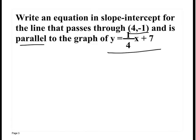We're writing an equation in slope-intercept form for the line that passes through (4, negative 1) and it's parallel to this graph. What is the slope of the original graph? One fourth. So what's the slope of this new line going to be? One fourth — it's parallel. So all I need to do is find b, my y-intercept.